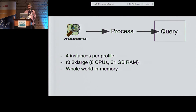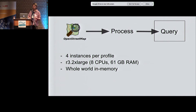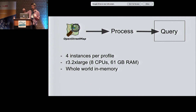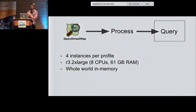We use R3.2xlarge instances — 8 CPUs, 61 gigabytes of RAM — because we need all that RAM to keep the whole world in memory. We're not routing on cities or small geometries; we're routing the whole world. We can route within Europe, we can route to Asia, we can route to China. It's a definite advantage that we can do routing all over the world without having to swap geographies.